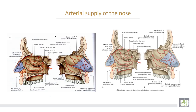This is the arterial supply of the nose: the anterior and posterior ethmoidal branches from the ophthalmic artery, the sphenopalatine artery arising from the external carotid artery, the septal branches from the superior labial branch of the facial artery, and the greater palatine branches.